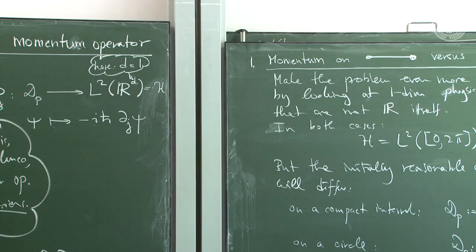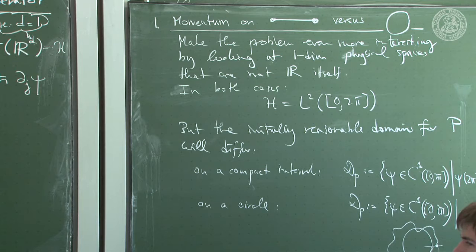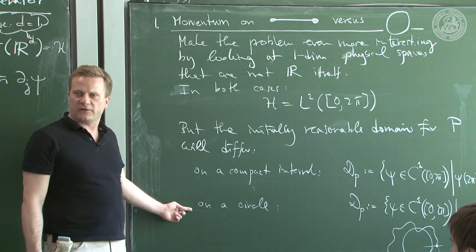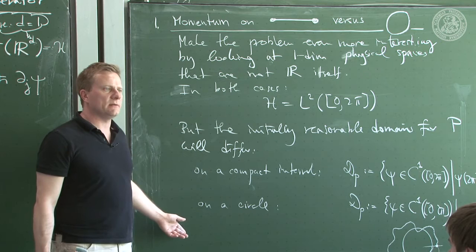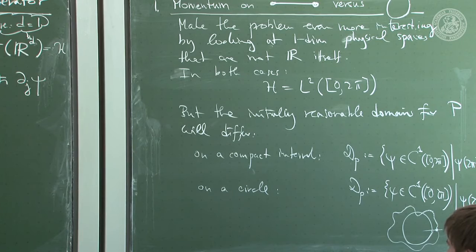These are two reasonable guesses. What we need to check is whether the operators so defined — for the interval and the circle — are indeed self-adjoint. It will turn out neither is self-adjoint. One is not even essentially self-adjoint but has self-adjoint extensions, while the other is already essentially self-adjoint with a unique self-adjoint extension. Today we do concrete calculations, and all the little theorems about inclusions will be important. Today is a real quantum mechanics lecture.